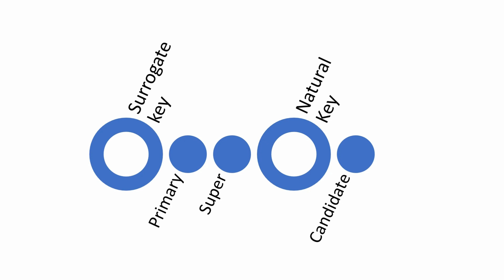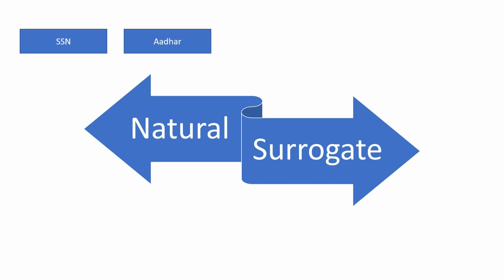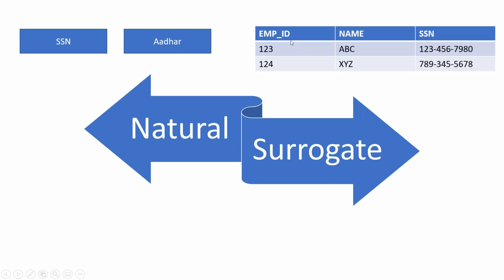Let's understand natural key and surrogate key first. Sometimes the dataset itself has a column using which we can uniquely identify each row. For example, every citizen in the US gets a unique social security number, and every citizen of India has a unique Aadhaar card number. So a table with a unique record for every citizen in the US will have SSN as the natural key.